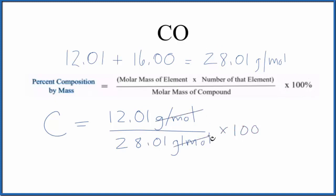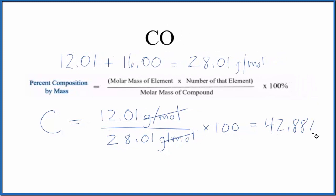Notice that grams per mole, that cancels out. We have it on the top and the bottom, we end up with 42.88%. What that means is if we have a mass of this carbon monoxide, 42.88% of that mass will be carbon.